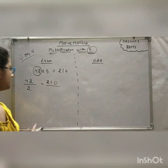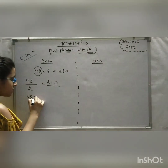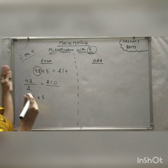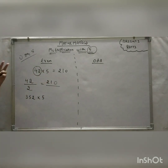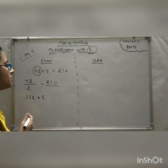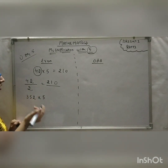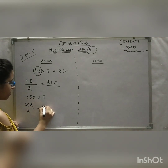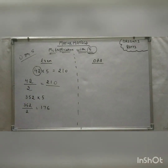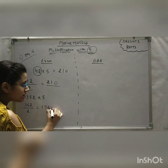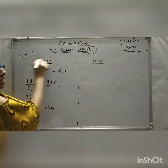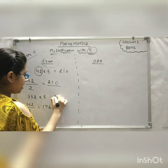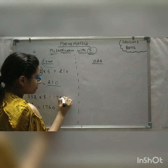Let's try one more example. Suppose we have the number 352, which we have to multiply with 5. This trick works for any number of digits — 2-digit, 3-digit, 4-digit, any number. Since 352 is an even number, just divide it by 2 and you get 176. Then simply write 0 at the end because it was an even number. So the answer is 1760.